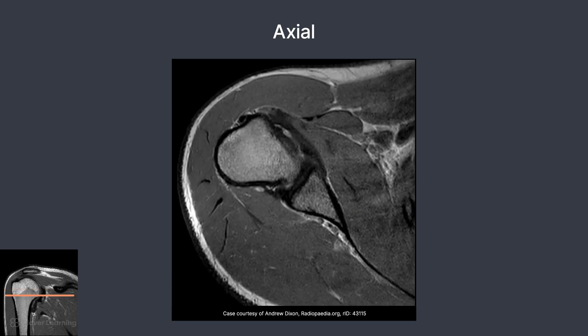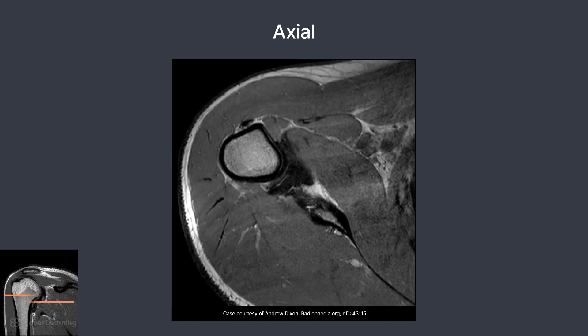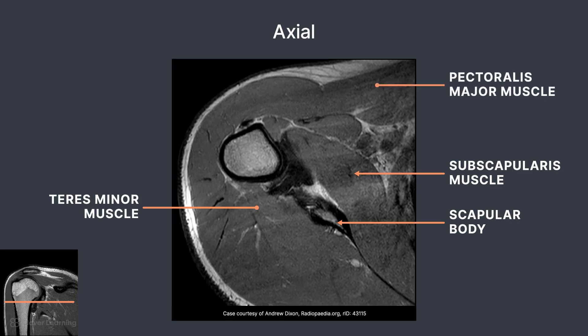Continuing inferiorly, now we can see the teres minor muscle underneath the deltoid muscle. Anteriorly, the subscapularis muscle is seen just in front of the scapula. On the final slice, the scapular body is seen with the subscapularis muscle anterior and the teres minor posterior. Toward the anterior portion of the body, the pectoralis major and minor are visible.